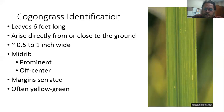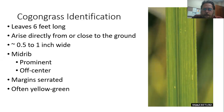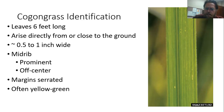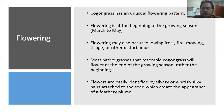Another way to identify it: if you run your hand along Cogongrass, it's going to feel really rough — the edges are serrated, so be careful, as it can leave paper cuts. It tends to have a yellowish-green color. But I really think the easiest identification method is looking at that offset midrib.